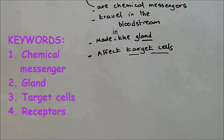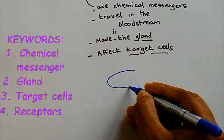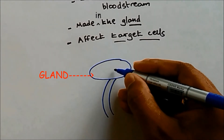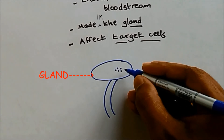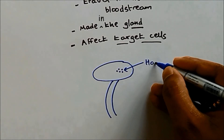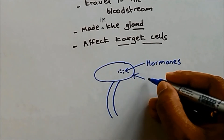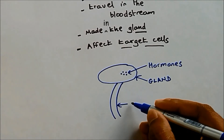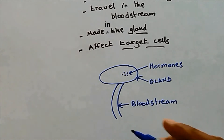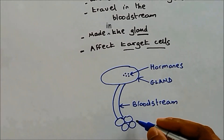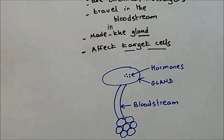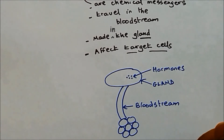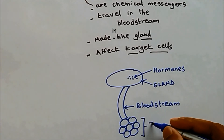So if I draw a diagram for this — we have the gland. The gland makes hormones. The hormones travel in the bloodstream to this special type of cell, and these are called target cells.